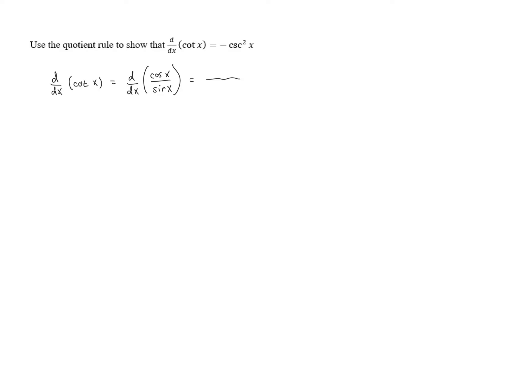We know that the quotient rule tells us low d high minus high d low. So the low function is sine of x times d high. The derivative of cosine is negative sine.